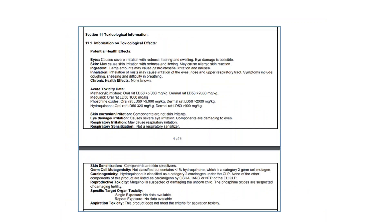Section 11, toxicological information, lists the potential health effects. It has acute toxicity data and effects on your body parts such as skin, eyes, respiratory system, specific organs, reproduction issues, and carcinogenicity.